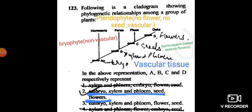Next is ferns. Ferns are the pteridophytes. It doesn't contain flowers and seeds, but these plants are vascular. That means it contains xylem and phloem.